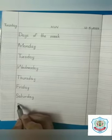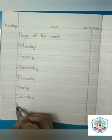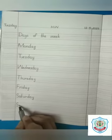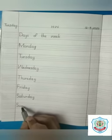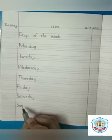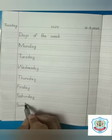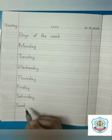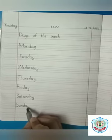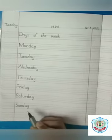Sunday — the last one is Sunday. S has a sound S. U has a sound A. N has a sound N. D has a sound D. And Y makes a sound A. Sunday.